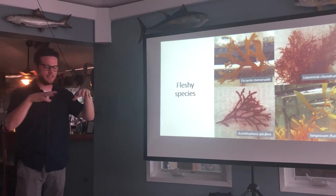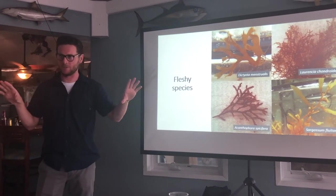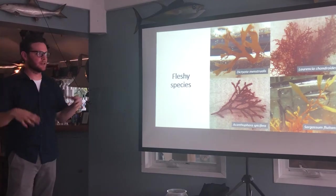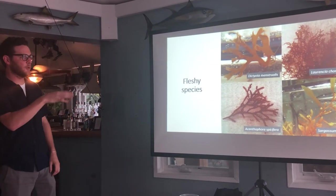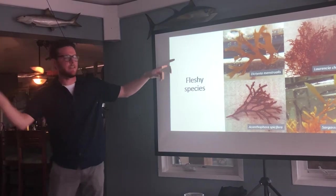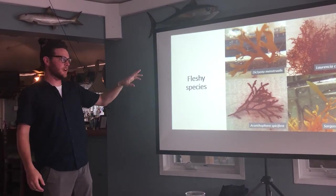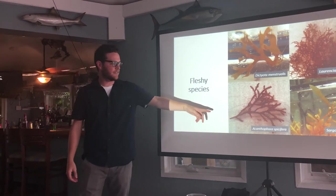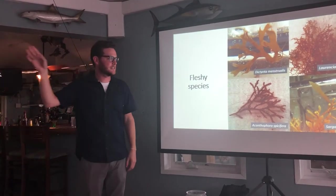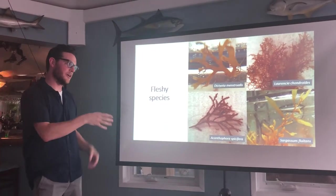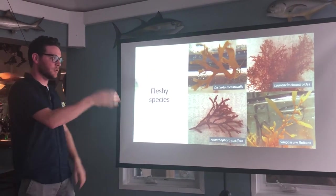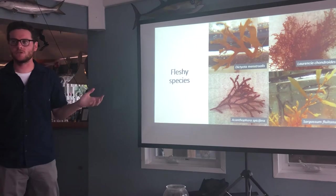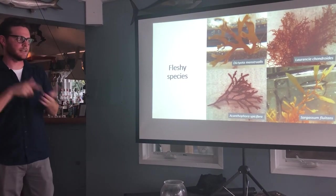For my study, since there's no consensus of how these organisms are going to respond, I want a broad perspective of what's going to happen for Florida reefs. I'm studying nine different species — four fleshy: Dictiota, which is everywhere and flagged as a potential nuisance species; Laurencia; Acanthophora, which is an invasive species on the west coast; and sargassum, which is relatively understudied but important for habitat, and we're seeing this huge sargassum bloom, so we need to know how it'll respond to increased temperature and CO2.